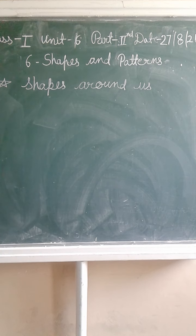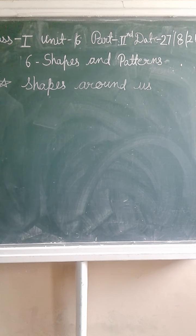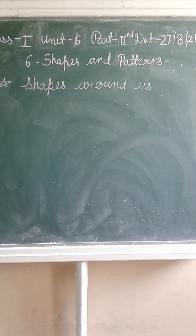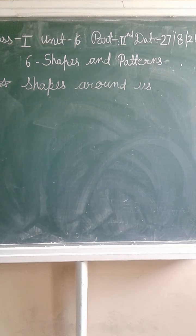We have many shapes around us like Square, Rectangle, Oval, Circle, and Triangle.